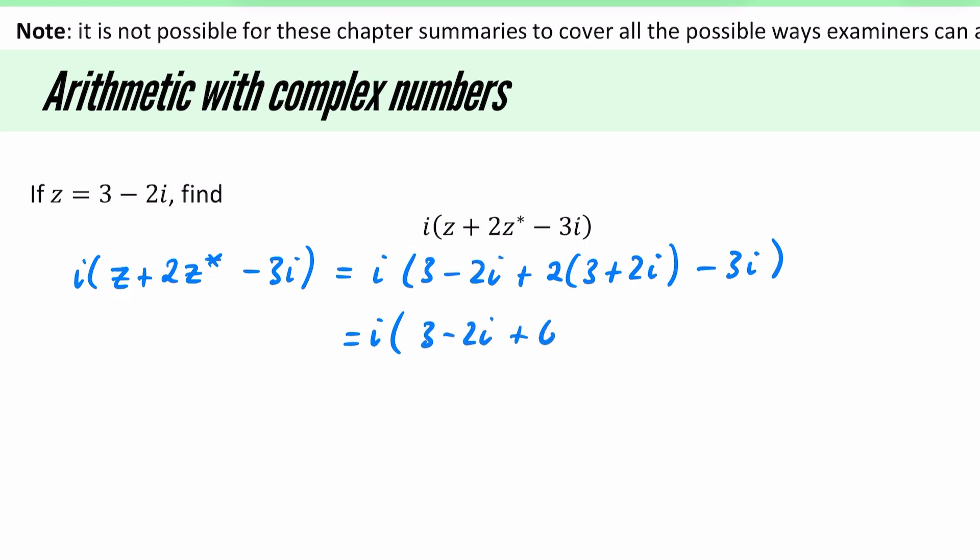I'm going to leave the i outside the bracket, and I'll just tidy up what is inside the bracket here. Expanding these brackets, we get a 6 plus 4i, and then we have the minus 3i, and then you know what to do with this, we collect the like terms. The real parts is a 3 and a 6, so that is just going to be our 9. We have minus 2 plus 4 minus 3, that's just going to be minus i.